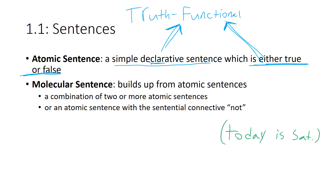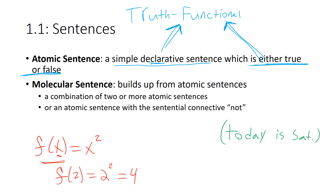Moreover, if we think about the concept of a function in basic algebra — for example, f(x) = x² — we have this idea of an input x and an output f(x). For example, f(2) = 2² = 4: input 2, output 4. This basic idea mimics what's going on in mathematical logic as developed by people like Gottlob Frege. We can have various atomic sentences and combine them to form a molecular sentence. We can think about the truth or falsity of a molecular sentence in terms of the individual truth values of its atomic sentences.